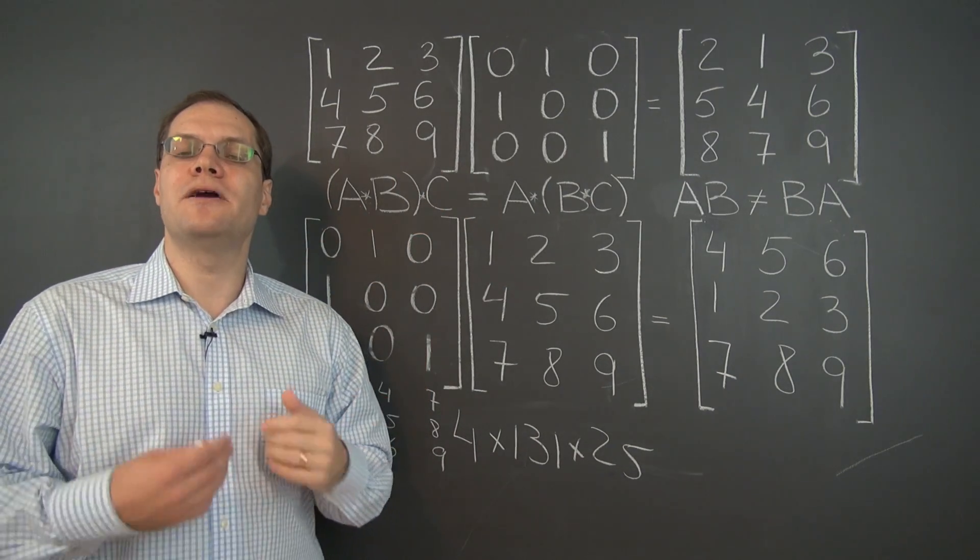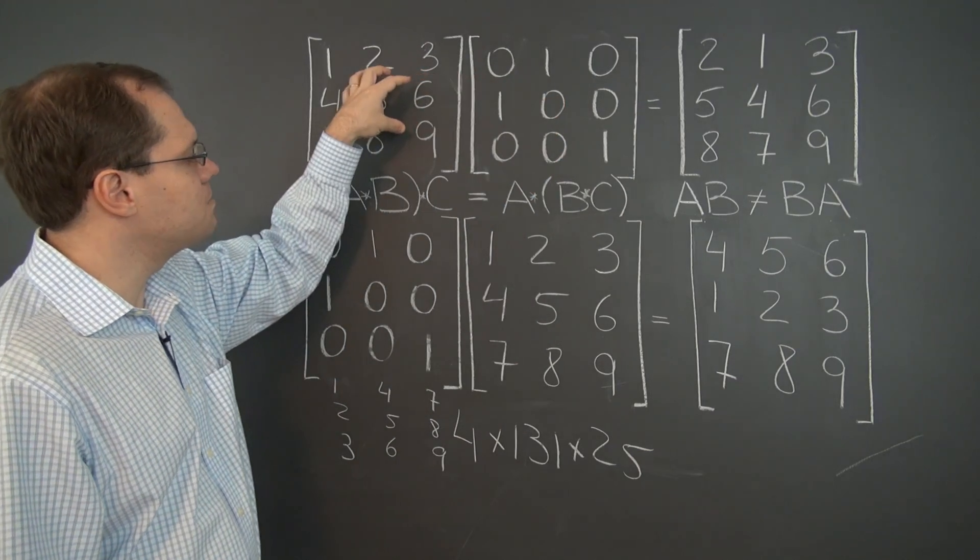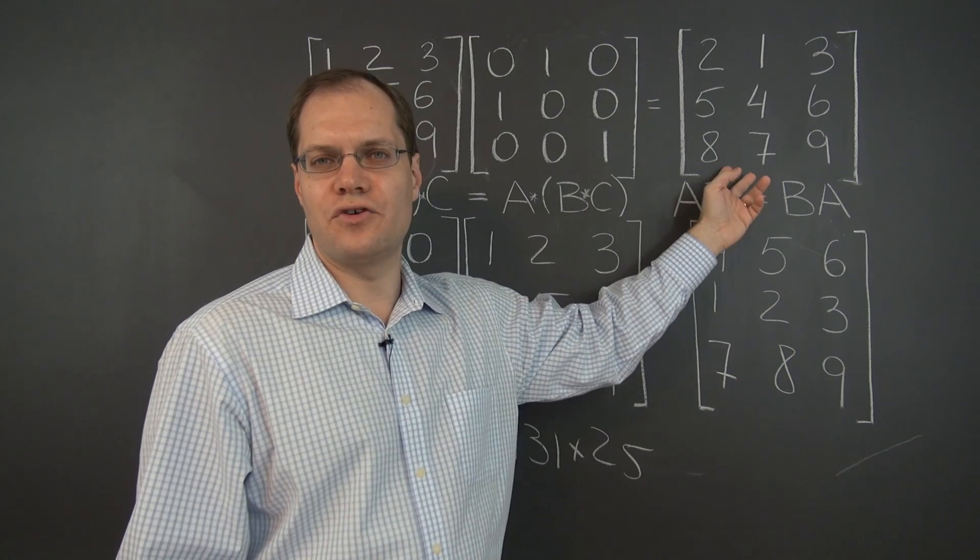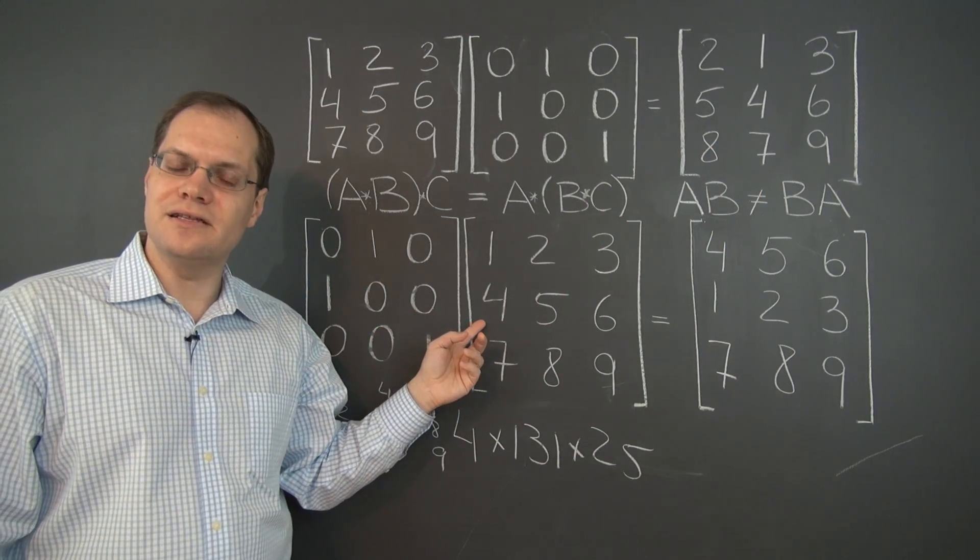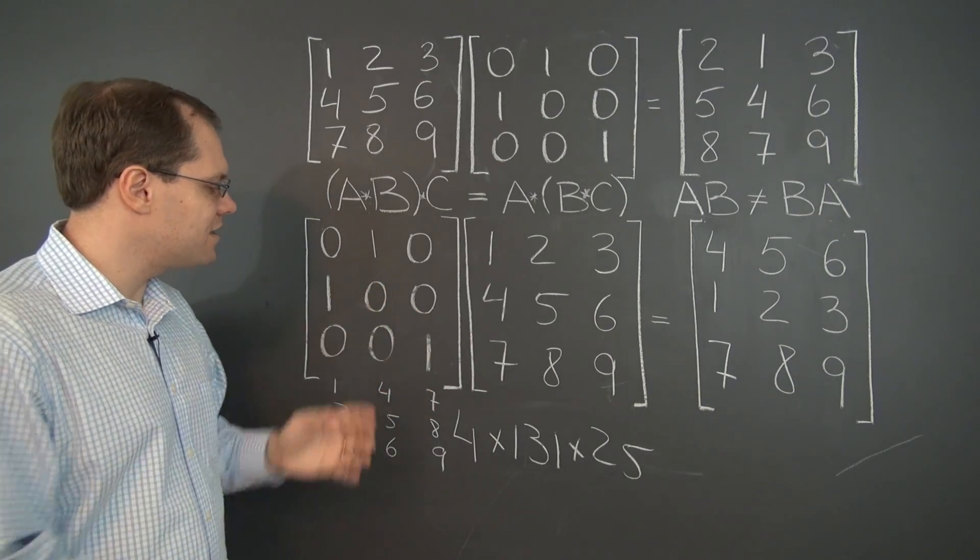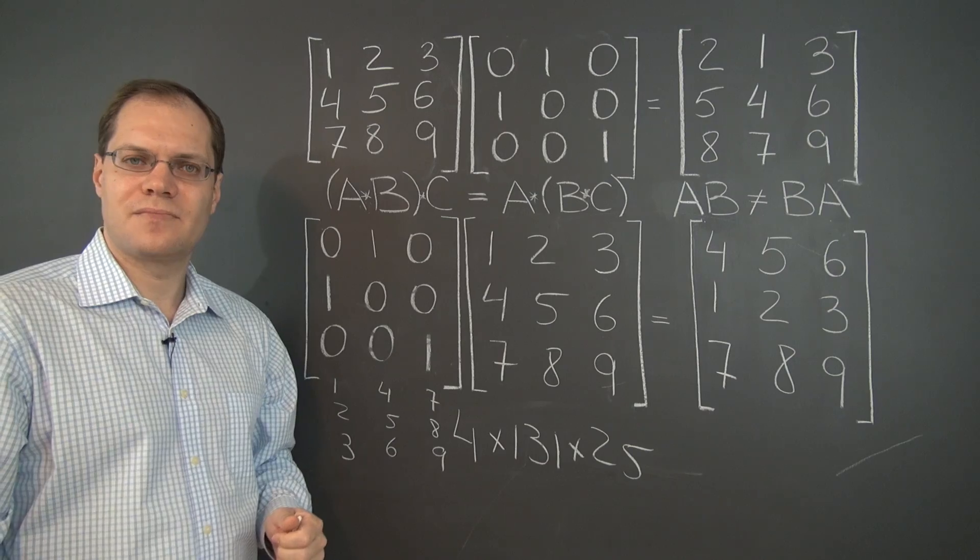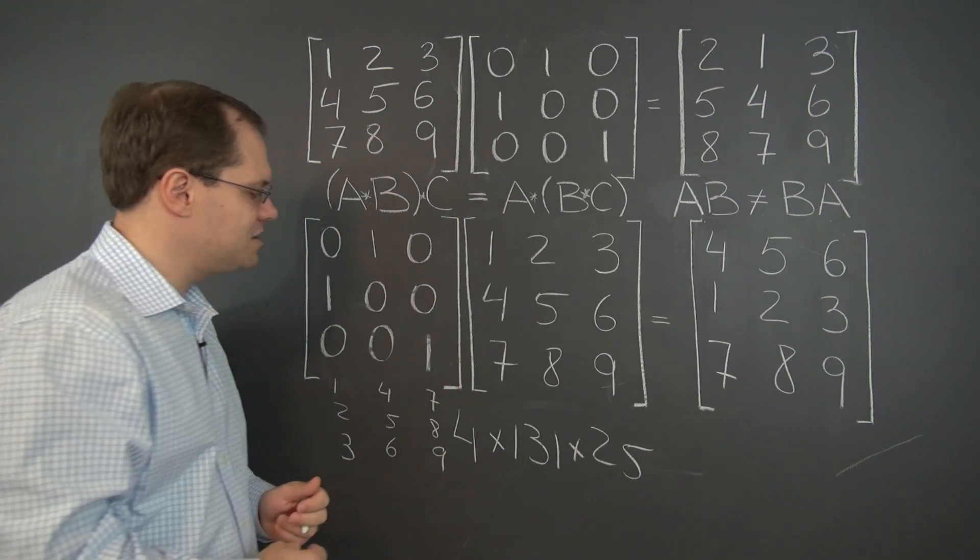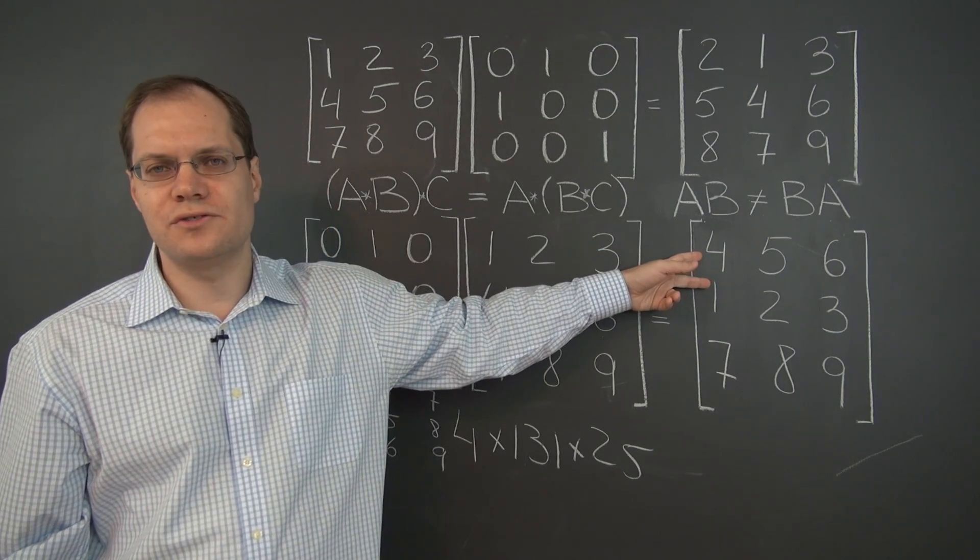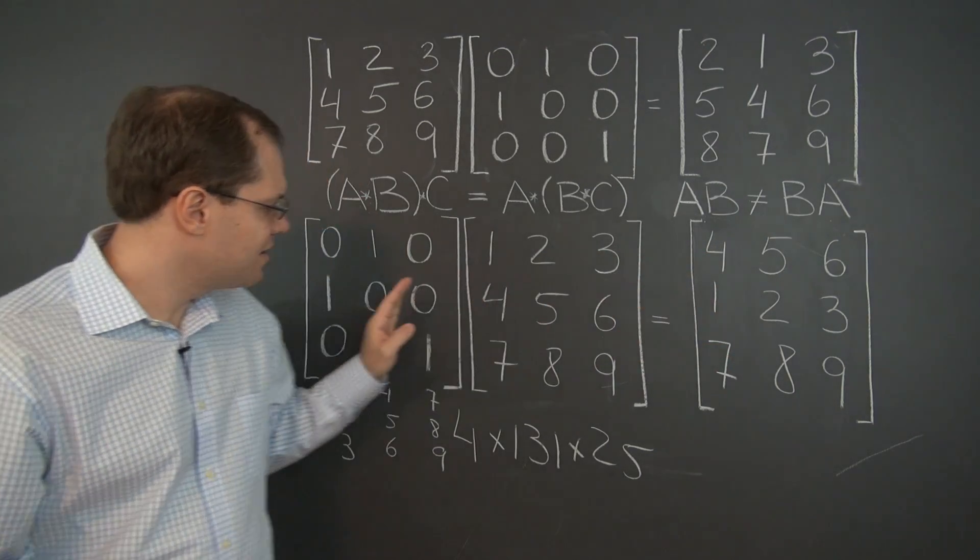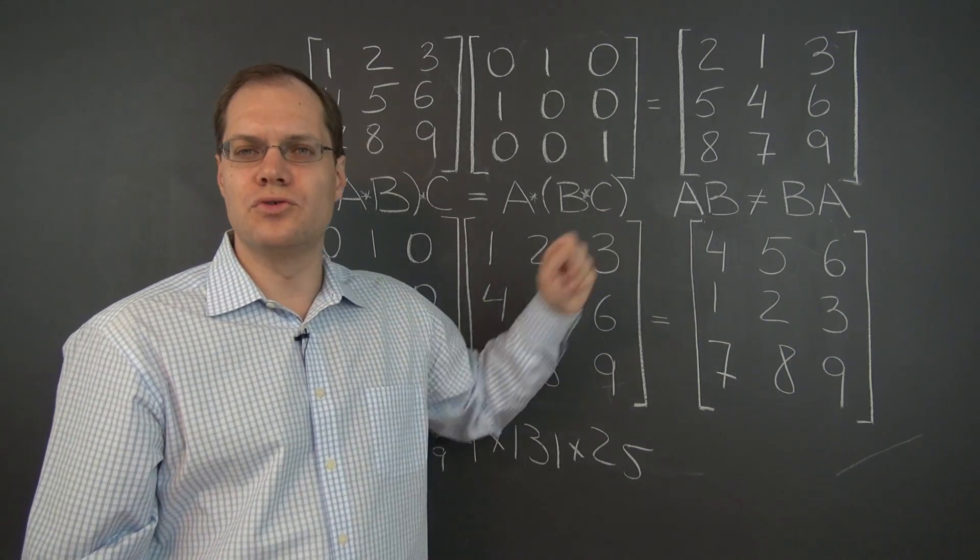Let's once again think of matrix multiplication as actions. The action of this matrix upon this matrix was to switch the first two columns. Now when we have the matrices in this order, let's think of this matrix as acting upon this matrix. If we think of it as this matrix acting upon this matrix, its action is to switch the first two rows. You see how this equals the original matrix but with the first two rows switched.